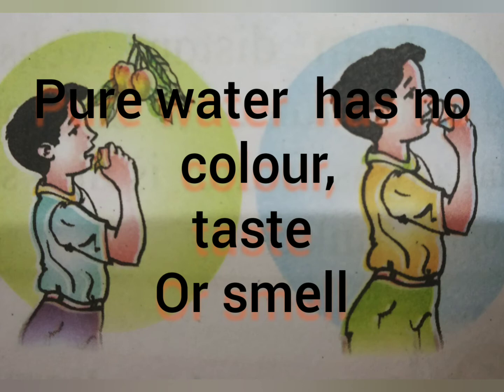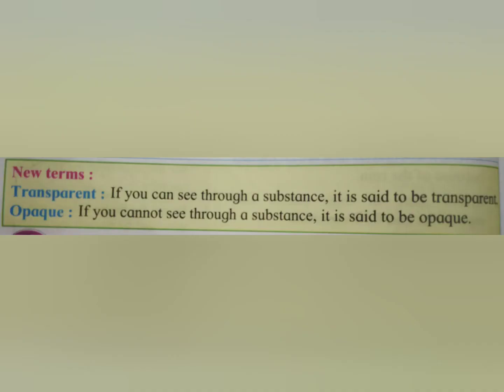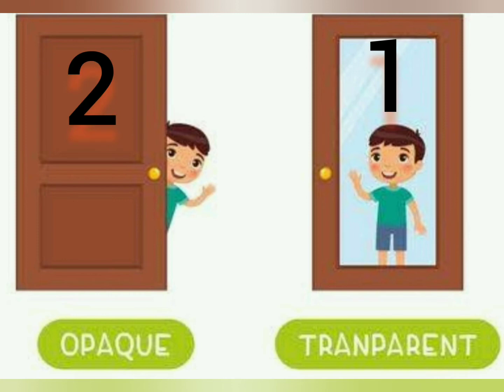Now children, here are new terms in front of you. Let's learn these new terms. First: transparent. If you can see through a substance, it is said to be transparent. So children, if you can see through a substance which is in front of you, then that substance is said to be transparent. Here are two pictures in front of you — the first is showing that the substance is transparent and the second one is showing the substance is opaque.